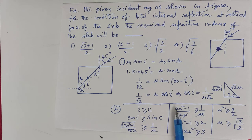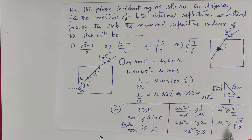Now square on both sides. (2μ² - 1)/(2μ²) greater than or equal to 1/μ². Upon simplifying this, we get refractive index must be greater than or equal to √(3/2).